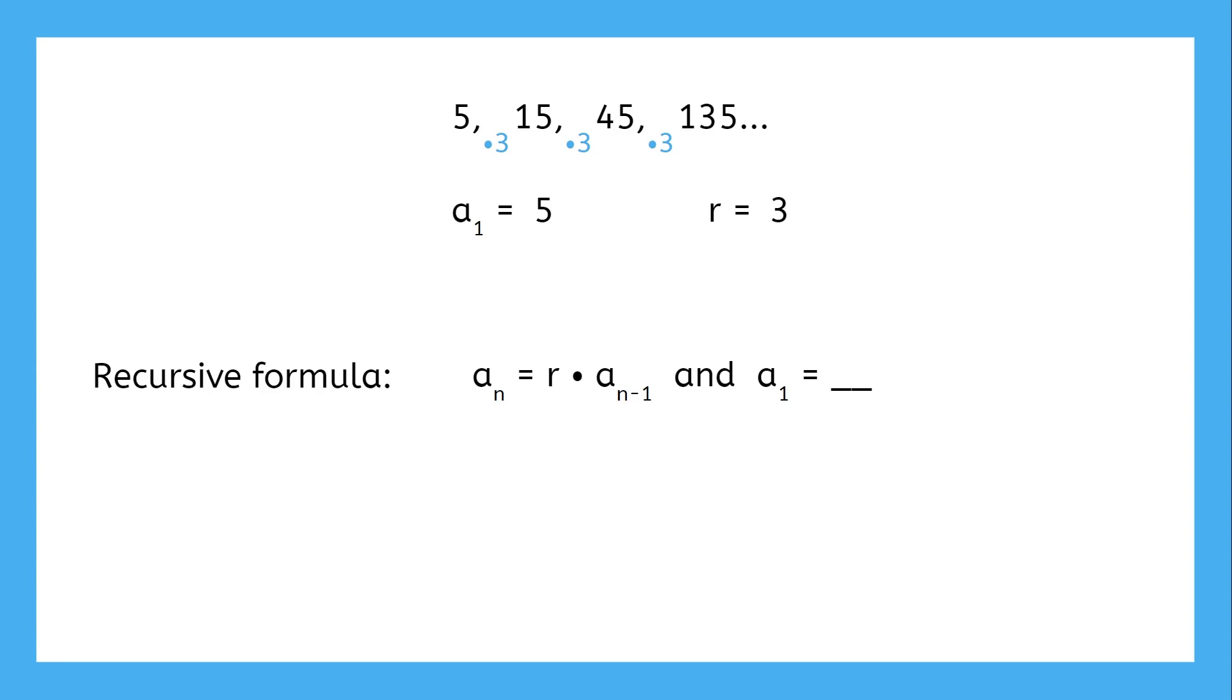To write the formula, we just put those pieces where they go. Any term is equal to the common ratio 3 times the previous term, and the initial term is 5. So this formula would give the geometric sequence that starts at 5 and multiplies by 3 for every term after that.